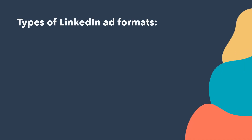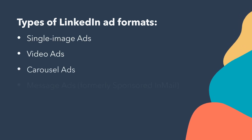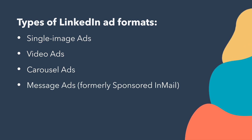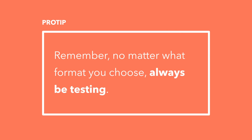After you've chosen your campaign objective and audience, it's time to choose which type of LinkedIn ad will be the most effective. LinkedIn offers several different types of ad formats: sponsored content, which includes single image ads, video ads, and carousel ads; message ads, which was formerly sponsored InMail; and dynamic ads. Remember, no matter what format you choose, always be testing.